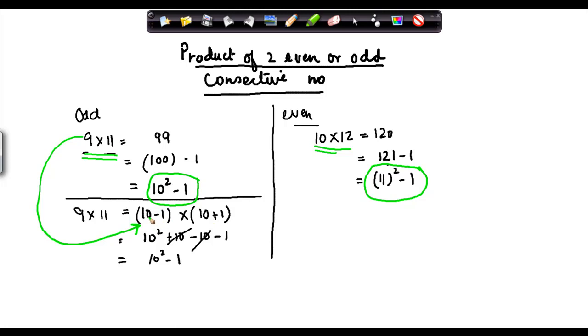Basically this, if you want to write in a formula, what you can write is that suppose this value is common, you can write as a minus 1 into a plus 1 is equal to a square minus 1. So this is a rule of algebra which says that the product of two consecutive numbers, even or odd, is equal to the square of 1 greater than these numbers minus 1.